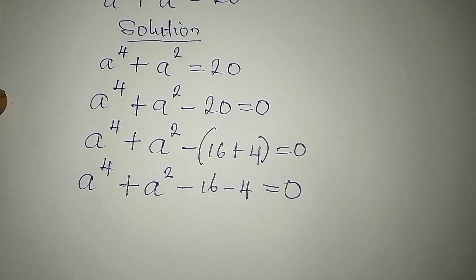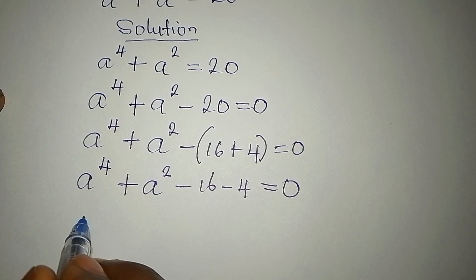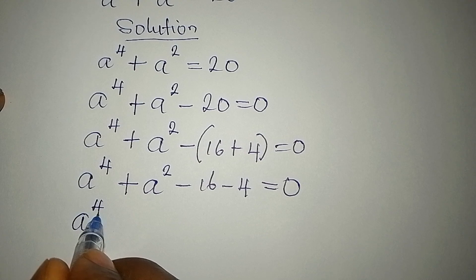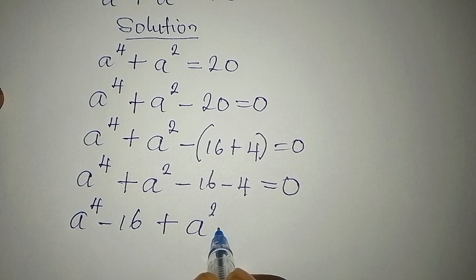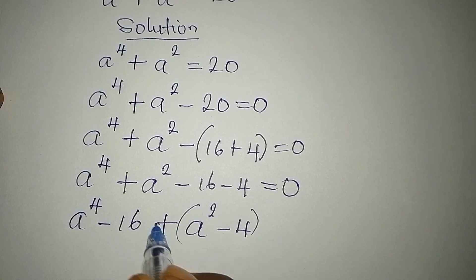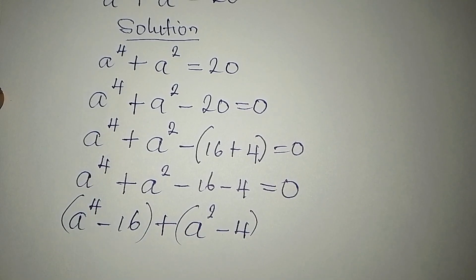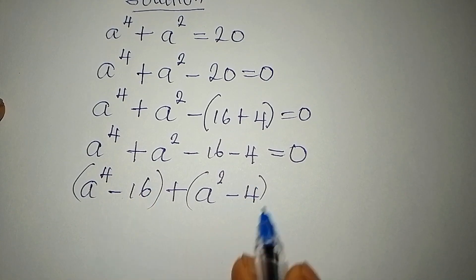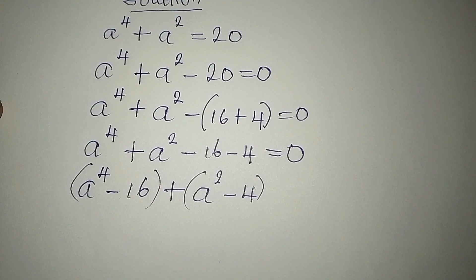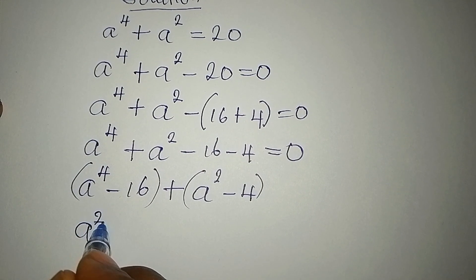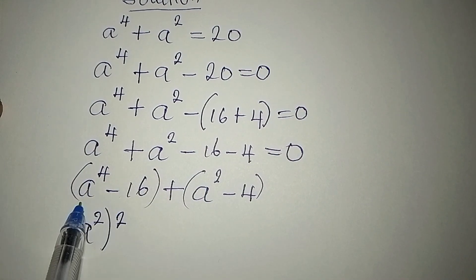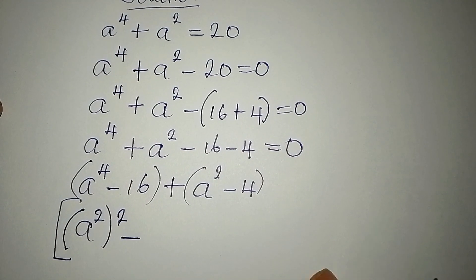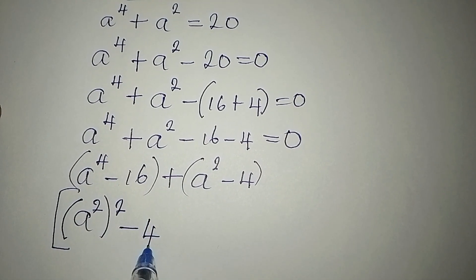Now we need to regroup so that we have A to the power of 4 minus 16, plus A to the power of 2 minus 4. We can write A to the power of 4 as A squared, squared. This is what A to the power of 4 alone is. Then we minus — this 16 here is 4 squared.